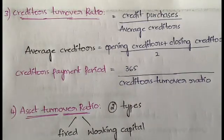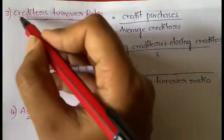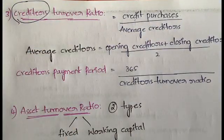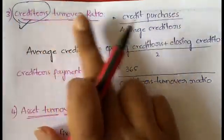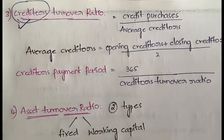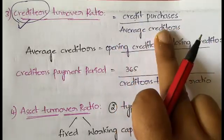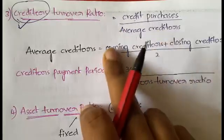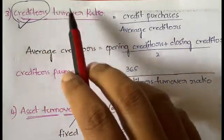The third type is creditors turnover ratio. Creditors are those from whom you are buying goods on a credit basis. While debtors are those to whom you sell, creditors are those from whom you buy on credit. Creditors turnover ratio equals credit purchases divided by average creditors. Average creditors is calculated as opening creditors plus closing creditors divided by two.